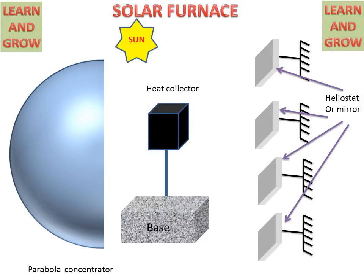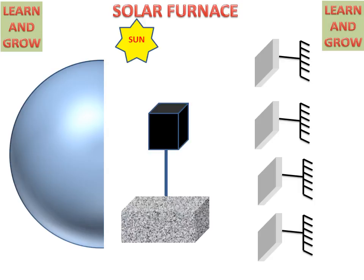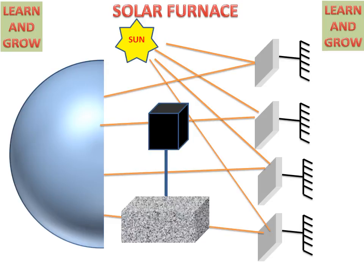If sun radiation will fall on the heliostat or mirror, then these will be reflected by the heliostat or mirror to the parabola concentrator. And this parabola concentrator will concentrate it on the heat collector, and our heat collector will heat at a temperature which is required for the process.